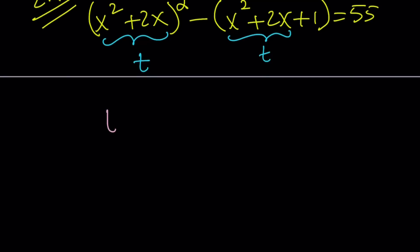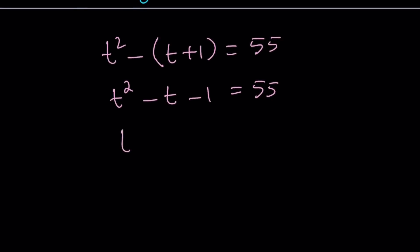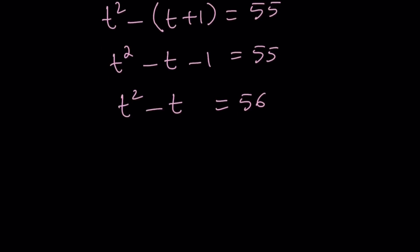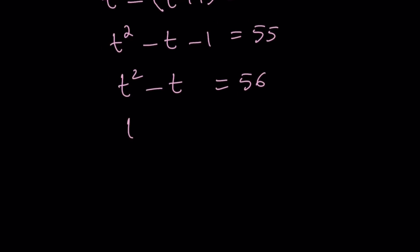So, we're going to write t² - (t + 1) = 55. So, if you expand it, you're going to get t² - t - 1 = 55. And then if you add 1 to both sides, t² - t = 56. The reason why I wrote it that way is because I want to show you a way to factor this.